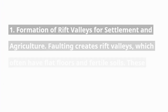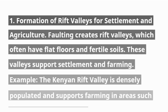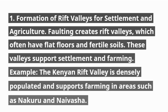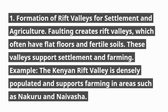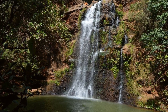1. Formation of Rift Valleys for Settlement and Agriculture. Faulting creates rift valleys, which often have flat floors and fertile soils. These valleys support settlement and farming. For example, the Kenyan Rift Valley is densely populated and supports farming in areas such as Nakuru and Naivasha.